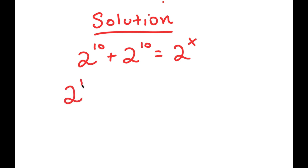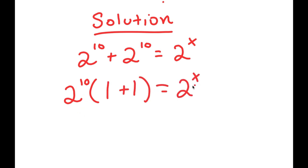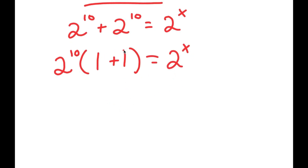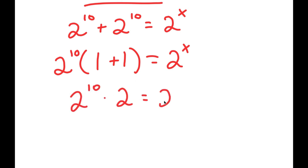If I factor out 2 to the power of 10, I get 2 to the power of 10 times — 2 to the power of 10 divided by 2 to the power of 10 is 1 — so I get 2 to the power of 10 times 1 plus 1 is equal to 2 to the power of x. Now, 1 plus 1 is equal to 2, so I get 2 to the power of 10 times 2 is equal to 2 to the power of x.